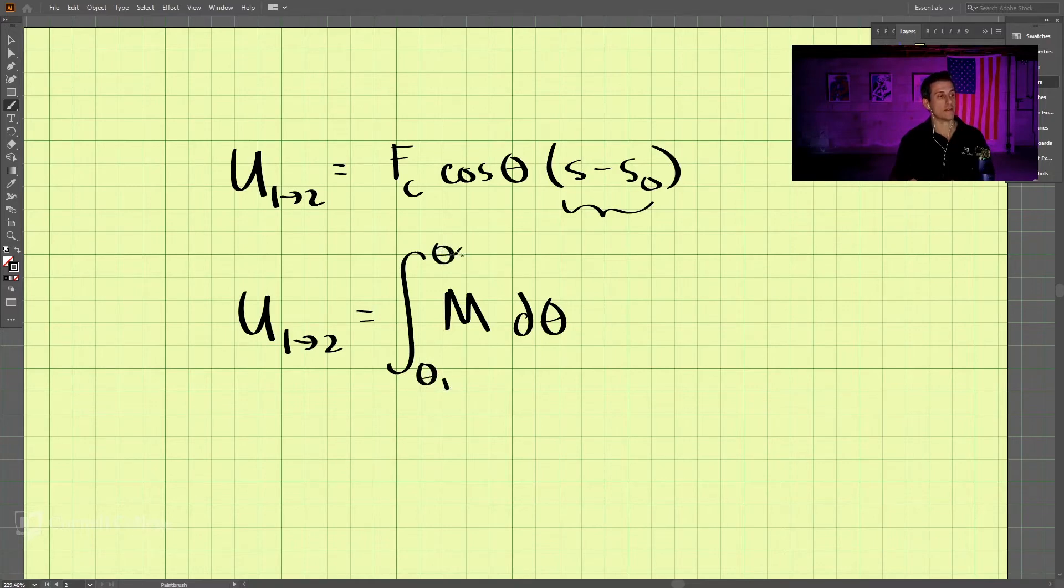So we can integrate this from theta one to theta two. Most of the time these moments will be a constant from theta one to theta two, they won't be changing. If they are changing we need to integrate, but if they're staying constant we can pull that outside of the integral.